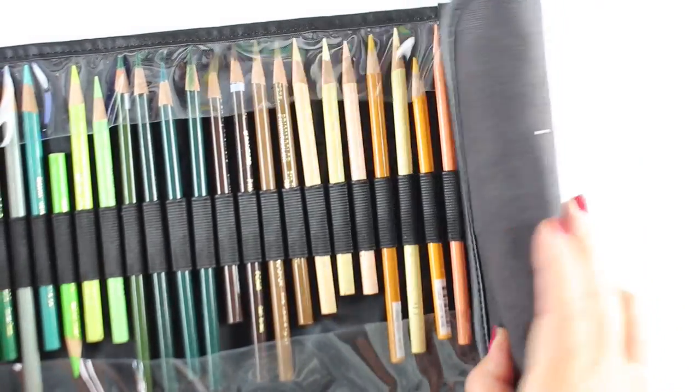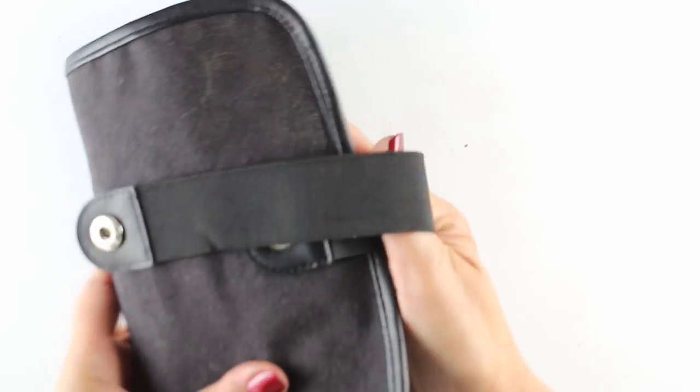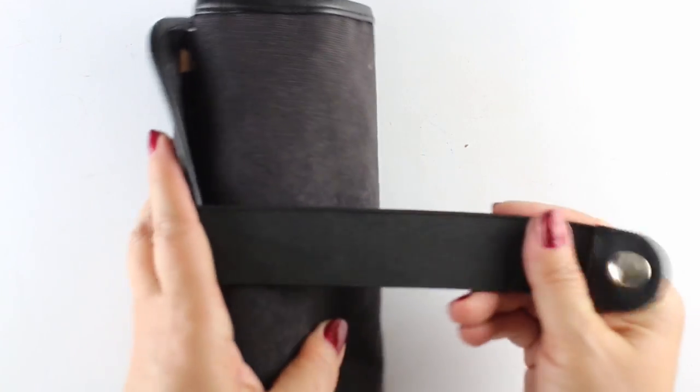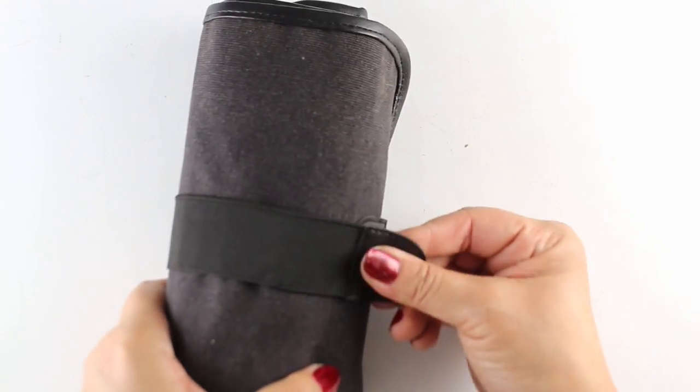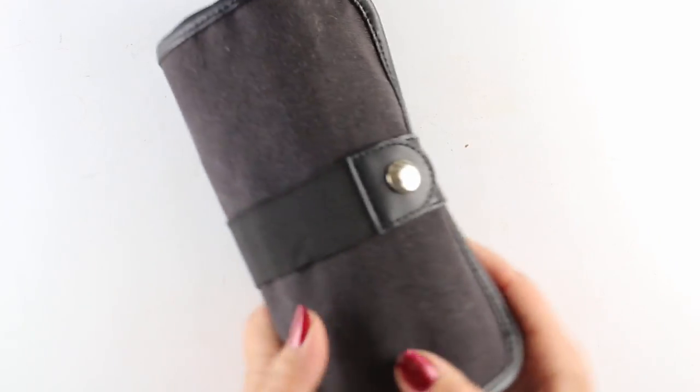This roll-up thing has plastic on both sides which holds it really nicely, and then it has this little band that goes around and will snap it closed, which makes it really helpful. It's great to tuck into a carry-on bag and take on an airplane with you, and you can just do some drawing while you travel.